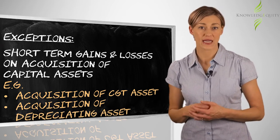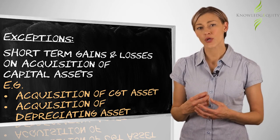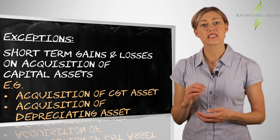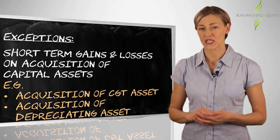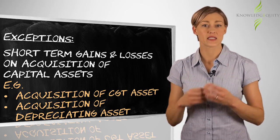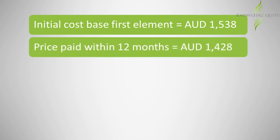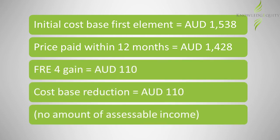For the acquisition of depreciating assets, if FRE4 occurs within 12 months before or after the time the taxpayer becomes the holder, then the gain is subtracted from the cost or opening adjustable value, or a loss is added to the cost or opening adjustable value. For example, Aussie Pty Ltd entered into a contract to acquire a CGT asset on August 1 for US$1,000 when the currency spot rate was 0.65. Aussie paid the debt on August 30, when the spot rate was 0.7. In this case, the cost base of the CGT asset is reduced by the gain of $110.